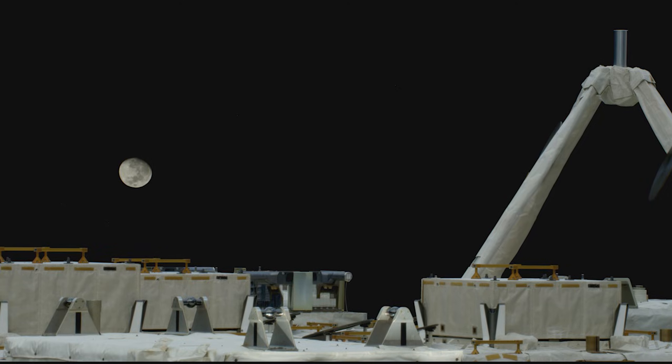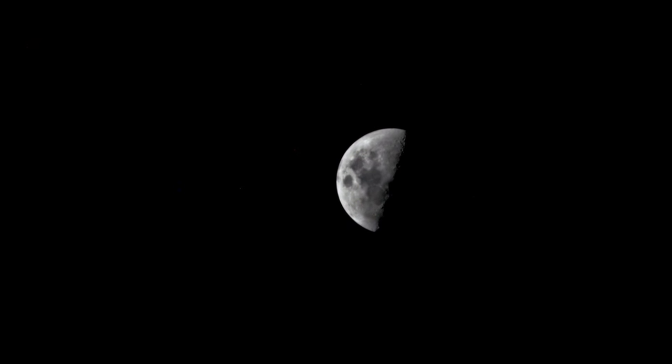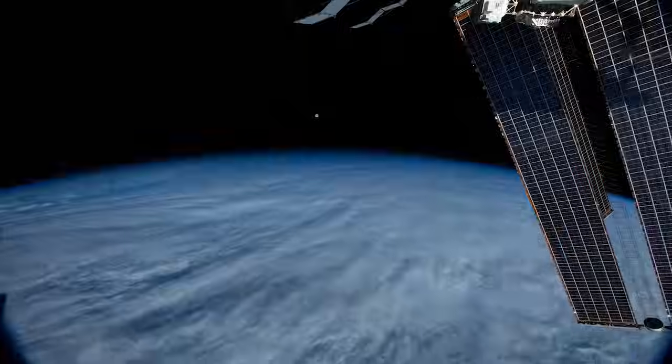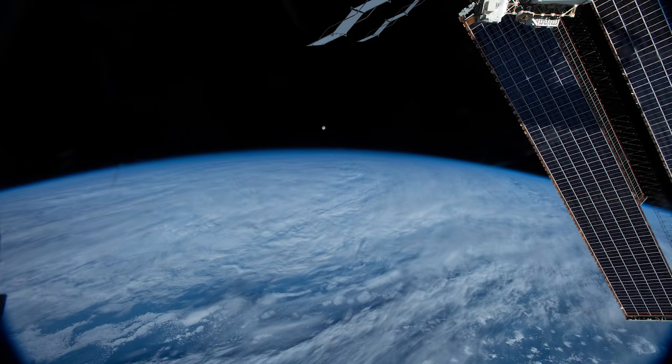On the space station, we see the same Moon phases as we do on the Earth's surface. Since the space station is only 250 miles closer to the Moon than we are here on the ground, astronauts on the station have the same perspective you have, but don't have the Earth's atmosphere in their way for photographs.